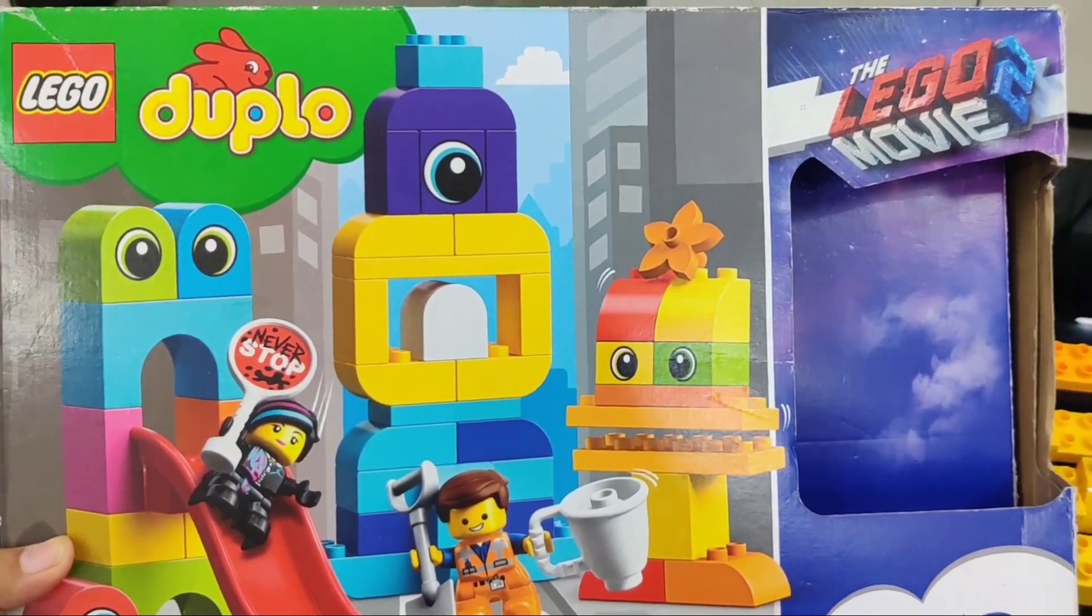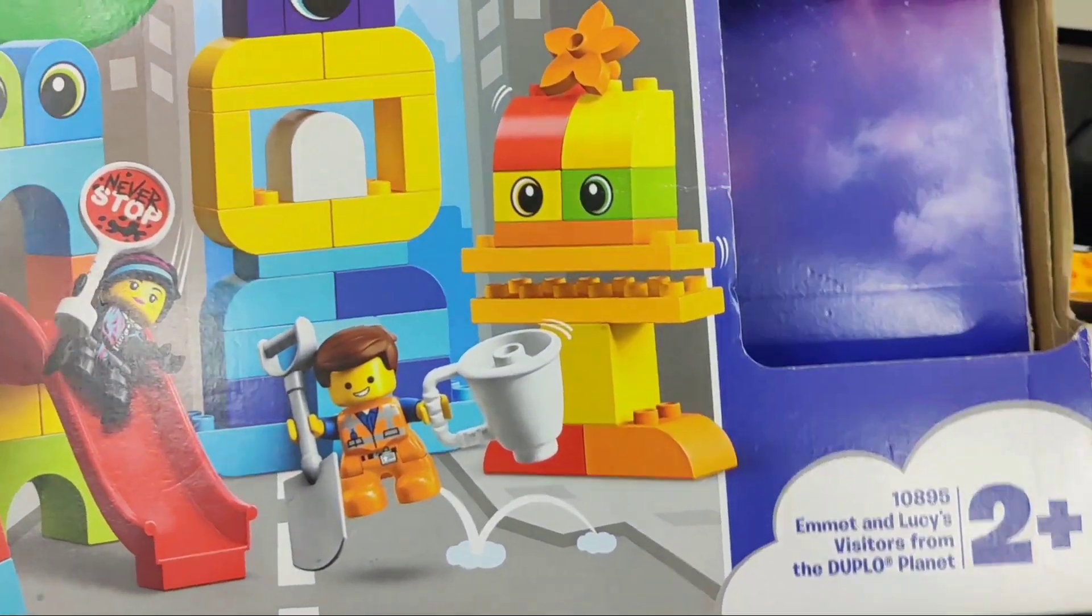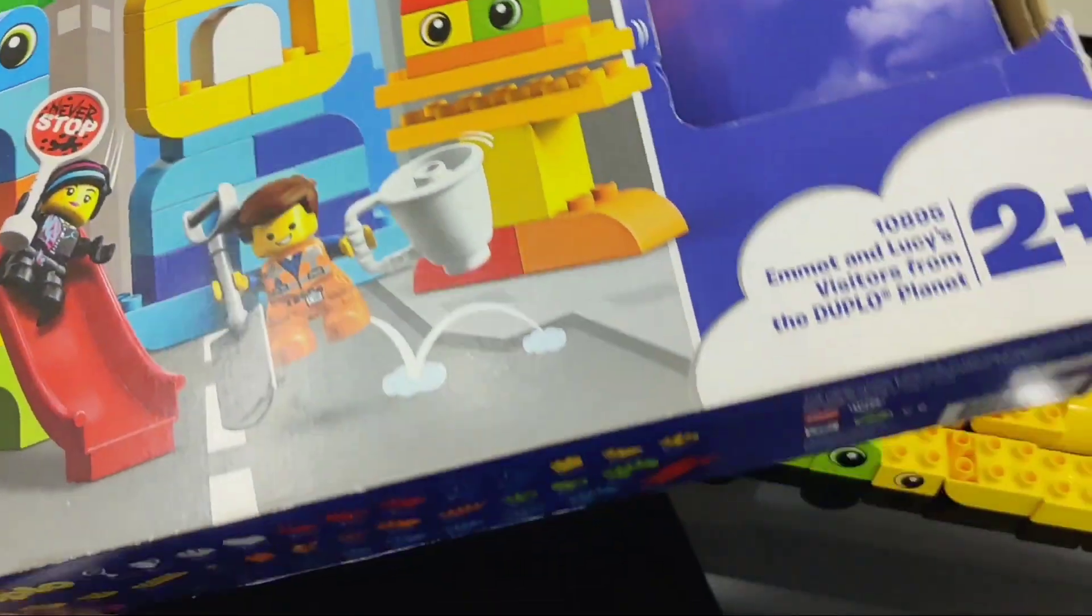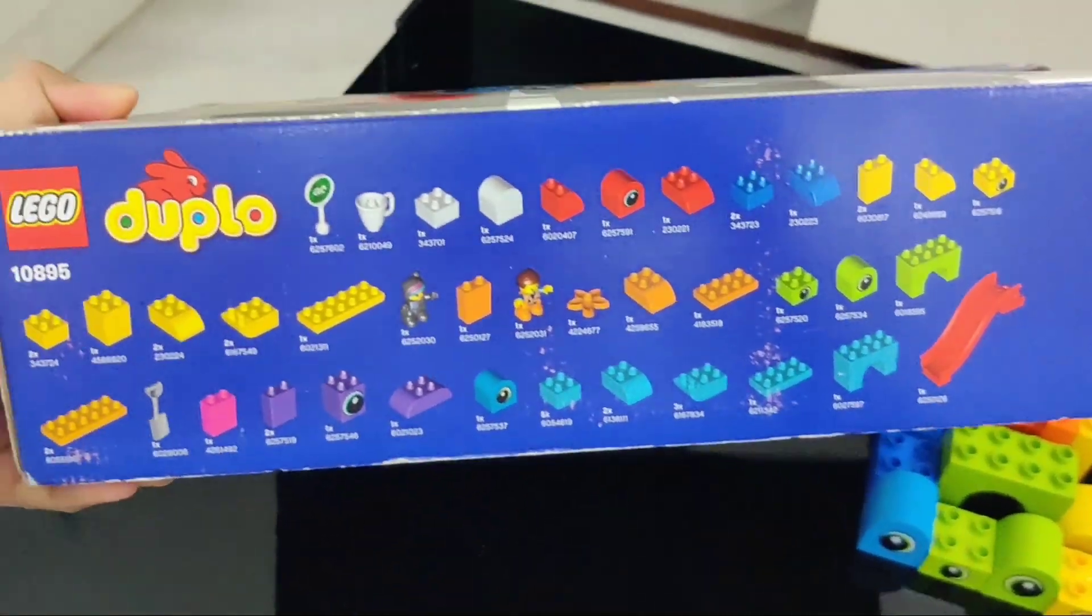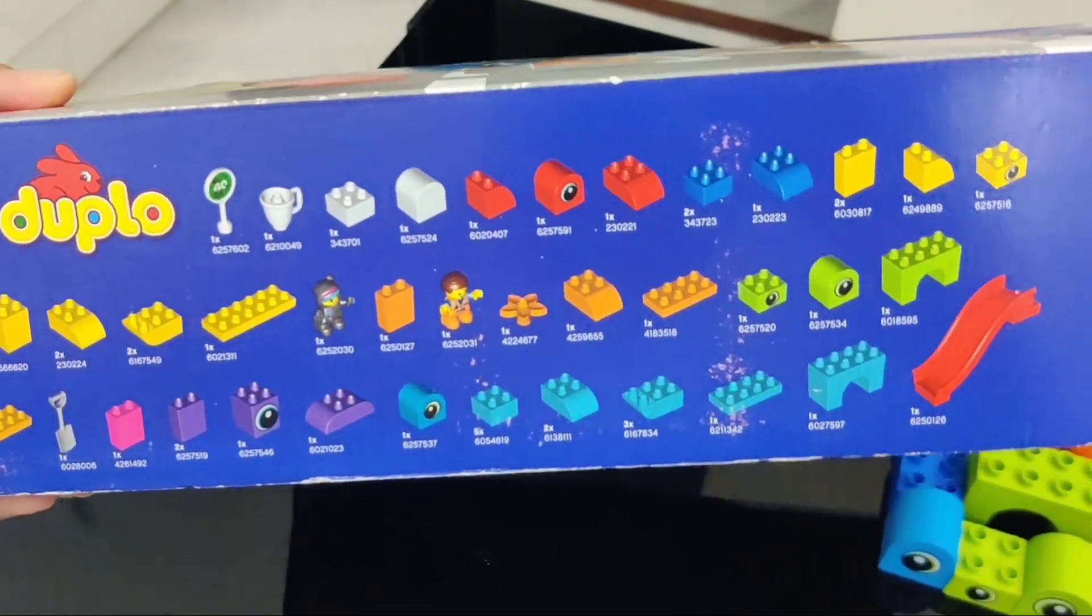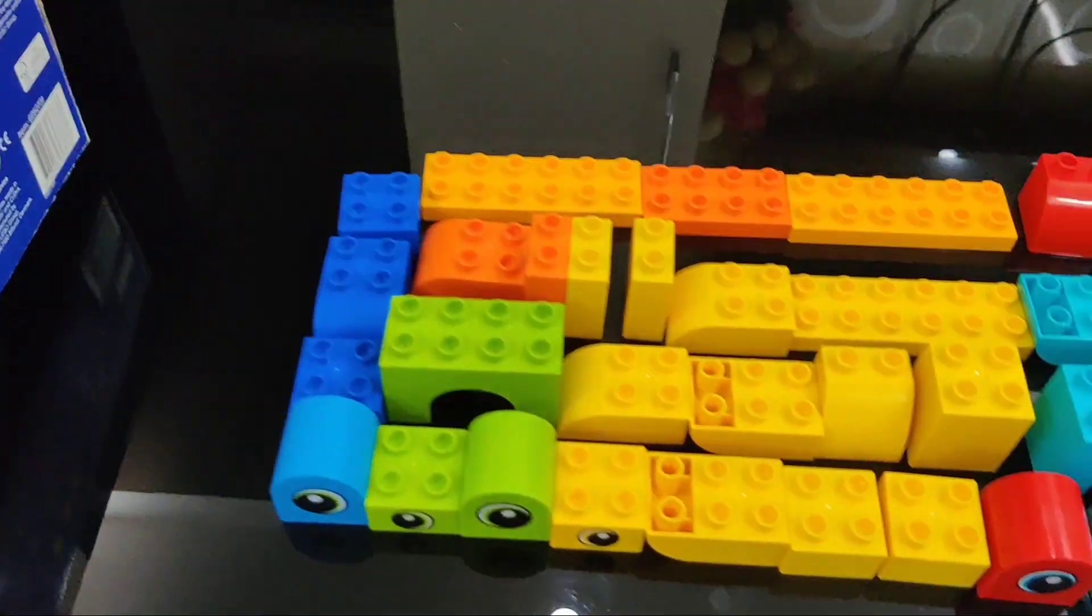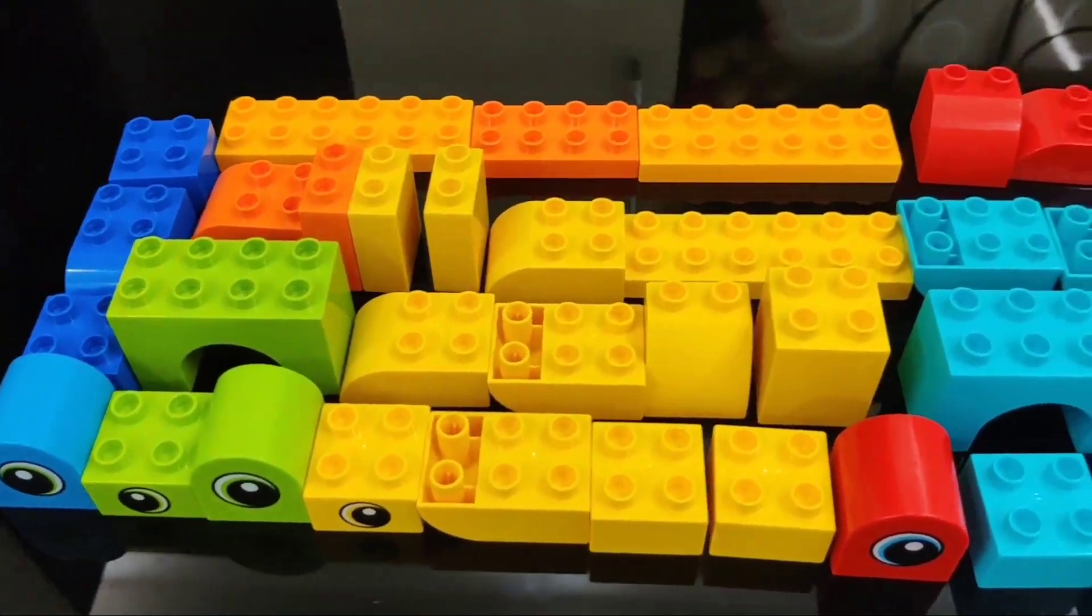This is LEGO DUPLO 10895 Emmett and Lucy Visitors from the DUPLO Planet. This is for age 2 plus as mentioned. It is a set of 53 pieces and the blocks are of really good quality and have beautiful shades to attract and engage your child.